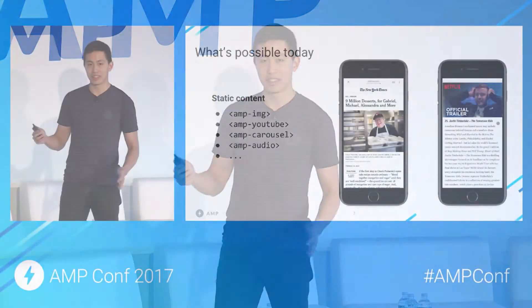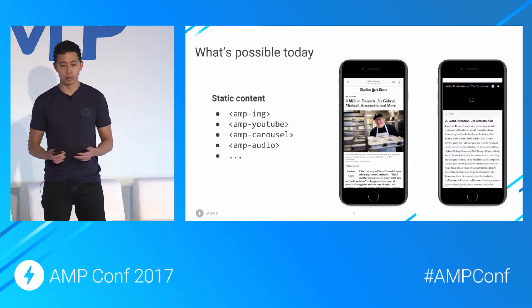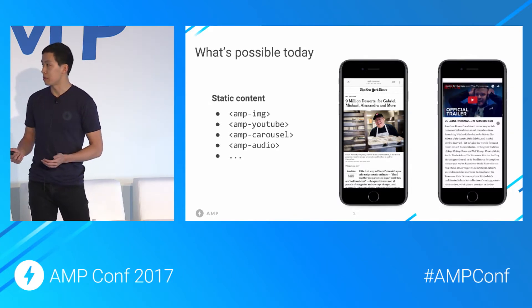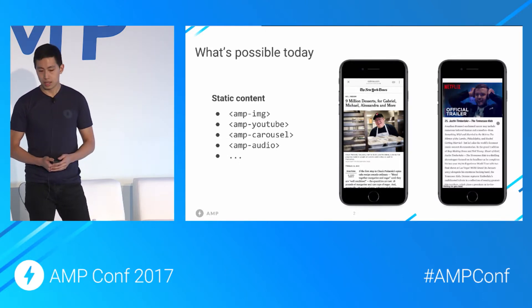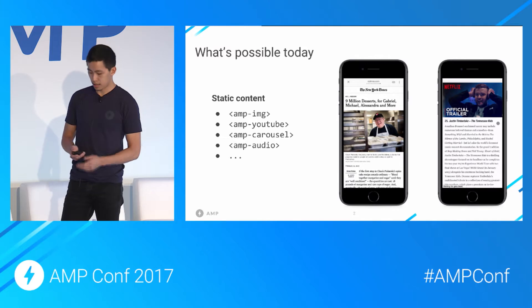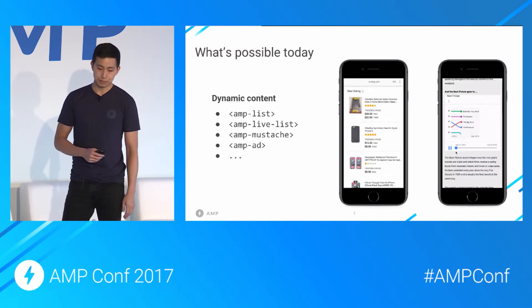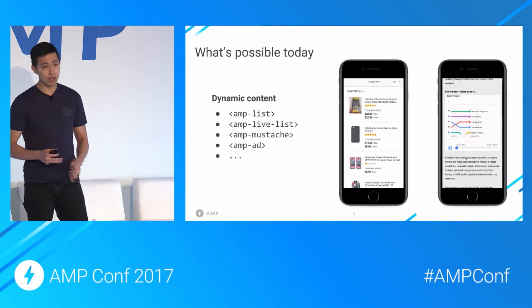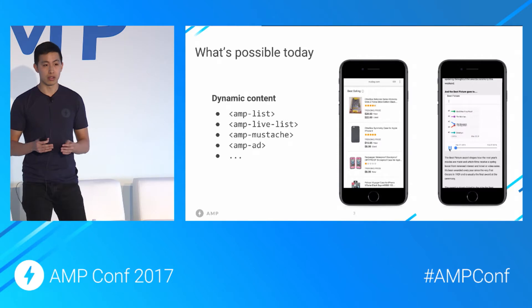We've gone over this many times, but let's quickly review some of the things we can do in AMP today. You may be most familiar with AMP pages in Google Mobile Search. AMP supports rich multimedia content through a wide array of AMP components. There are many different types of AMP content, from mostly static content like news, to dynamic content like live blogs and ads. The dozens of AMP components available offer rich but predefined interactivity within the scope of the individual element.